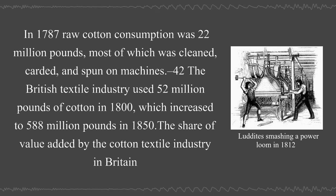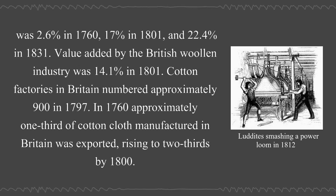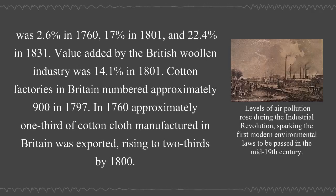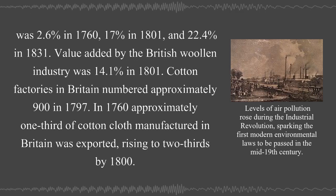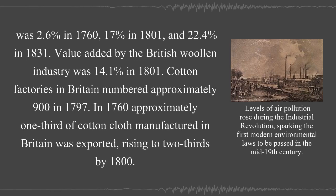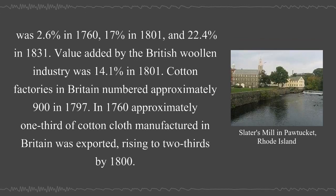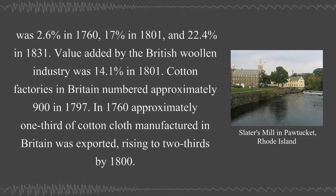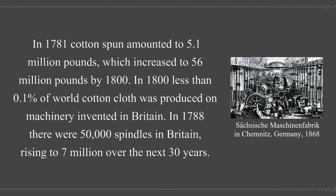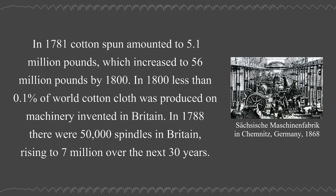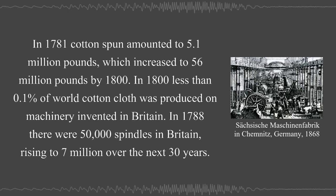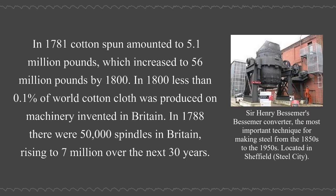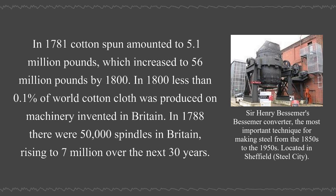The share of value added by the cotton textile industry in Britain was 2.6% in 1760, 17% in 1801, and 22.4% in 1831. Value added by the British woolen industry was 14.1% in 1801. Cotton factories in Britain numbered approximately 900 in 1797. In 1780, there were 50,000 spindles in Britain, rising to 7 million over the next 30 years.